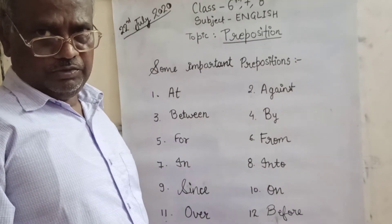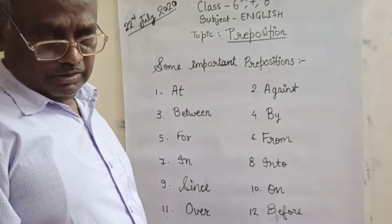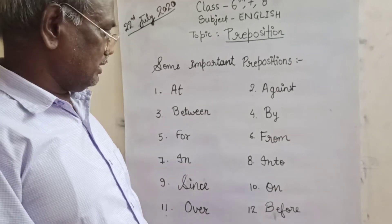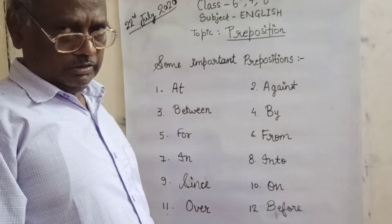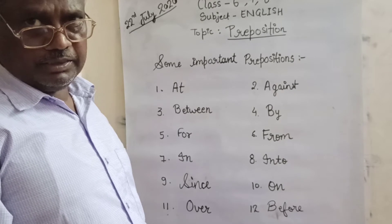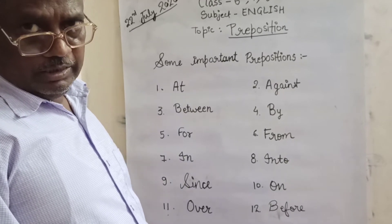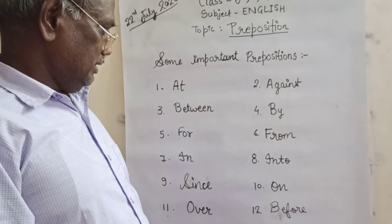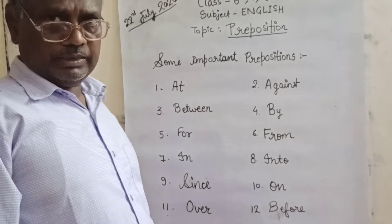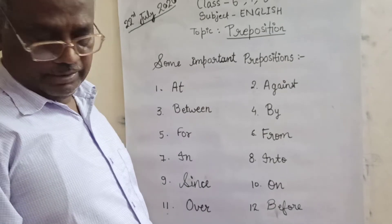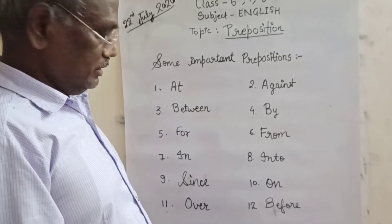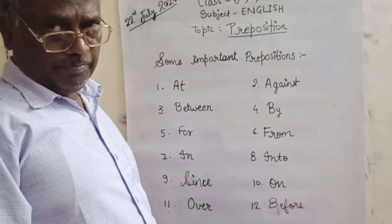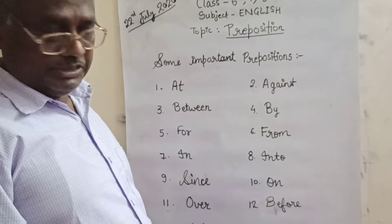'Into': He fell into the water. Sohan fell into the water. 'On': The book is on the table. The pen is on the table. The coffee is on the chair.